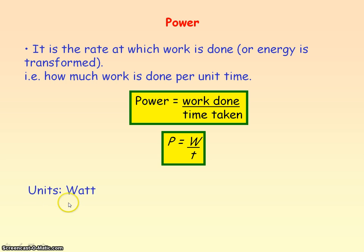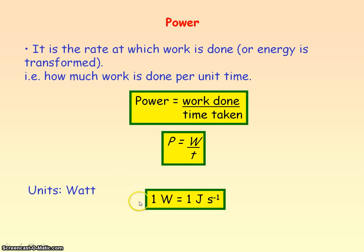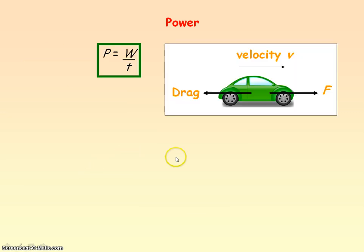The unit of power is the watt, and you need to know the definition of one watt, which comes from the definition of power. One watt is equal to the units of work done — joules — divided by the units of time — seconds. So one watt equals one joule per second, meaning one watt is the power when one joule of work is done per second.